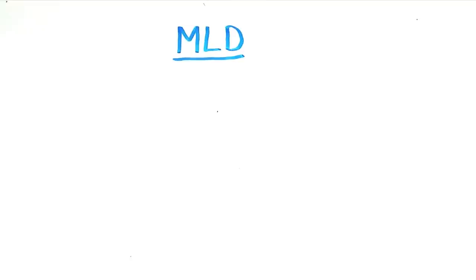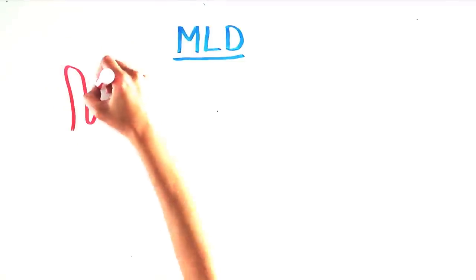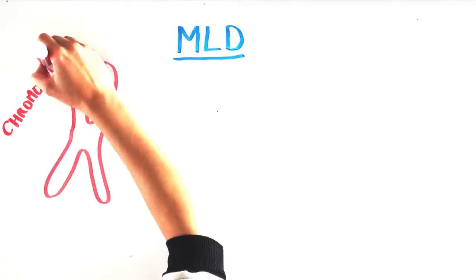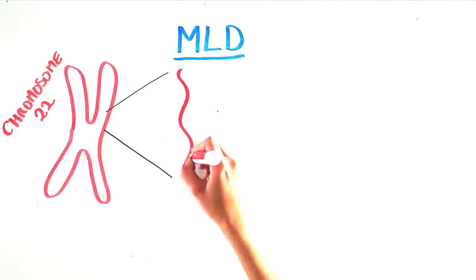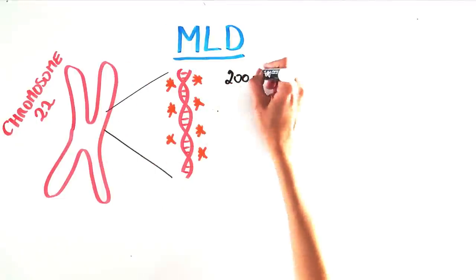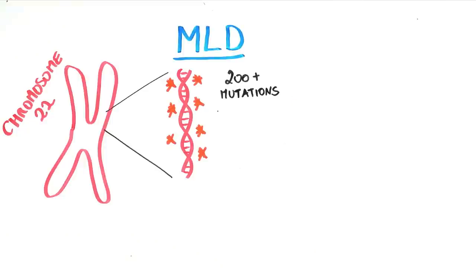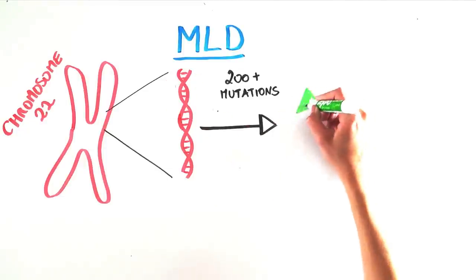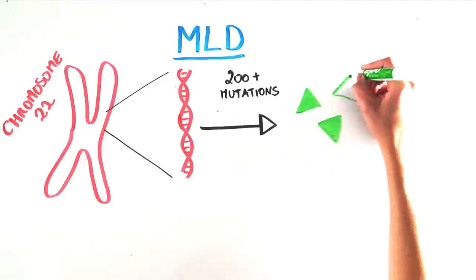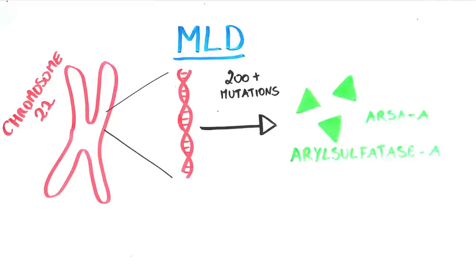Let's delve into the biology behind MLD. It is caused by a mutation, or a change in the DNA sequence, on chromosome 22. There are over 200 different mutations that can cause MLD. The gene mutated is responsible for making an enzyme called arylsulfatase A, abbreviated ARSA.